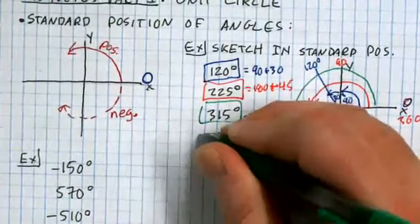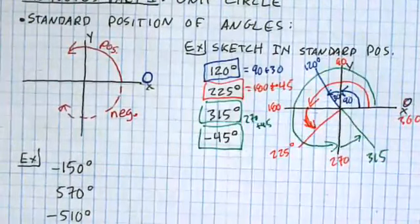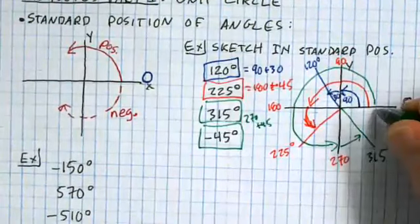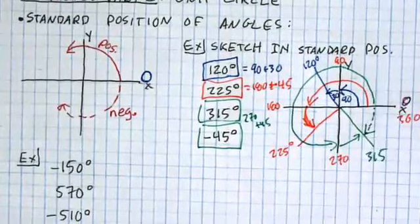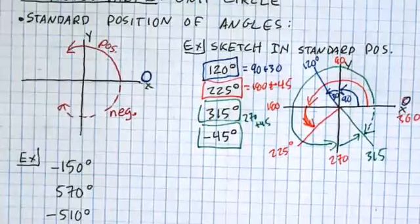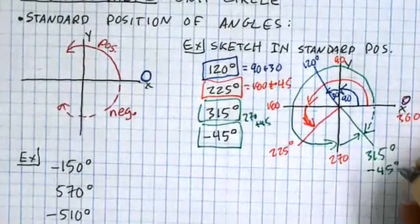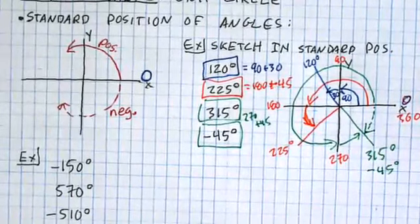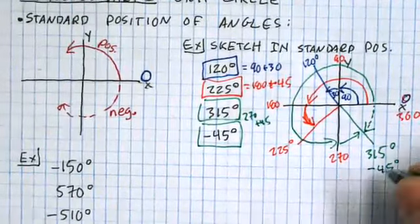Now remember, if I go negative angle, which way am I going? I'm going to be going clockwise. So if I start here at zero and I went negative 45 degrees - oh my gosh, that gets us to the exact same place. So 315 degrees and negative 45 degrees have the same position on the unit circle, and those are what we call co-terminal angles.